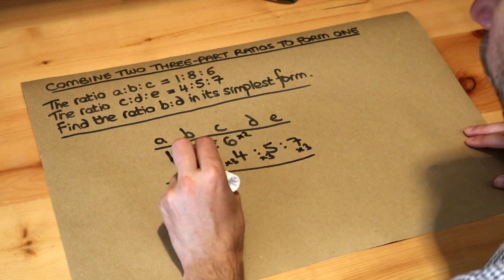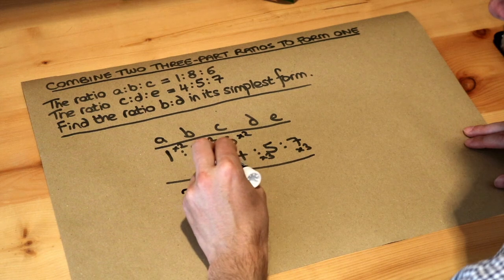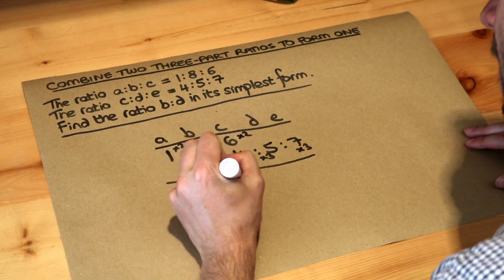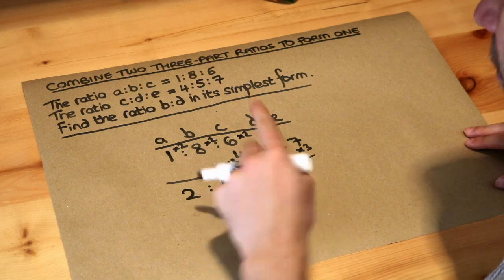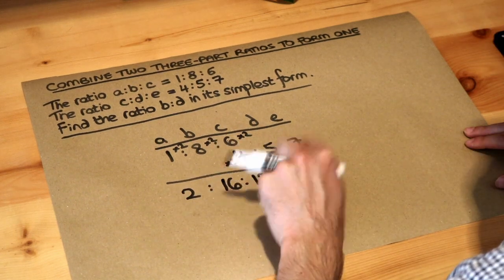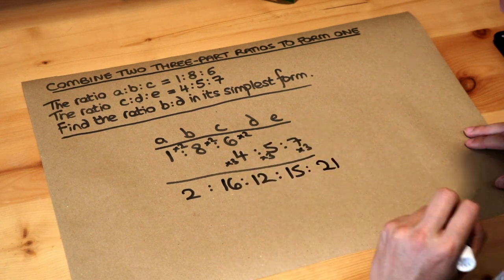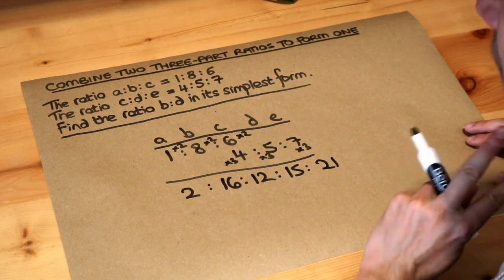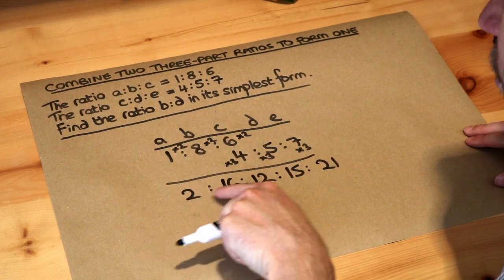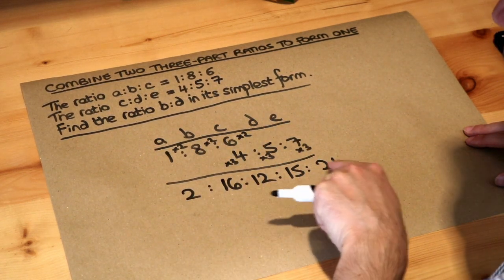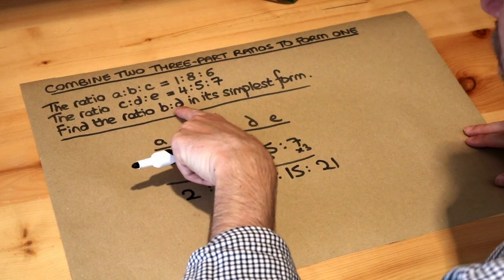So if we do that: 1 times 2 is 2, 8 times 2 is 16, 6 times 2 is 12. And 4 times 3 is also 12, so that's consistent. 5 times 3 is 15, and 7 times 3 is 21. So we now know that the combined ratio A to B to C to D to E is 2 to 16 to 12 to 15 to 21. And we want to find the ratio of B to D.